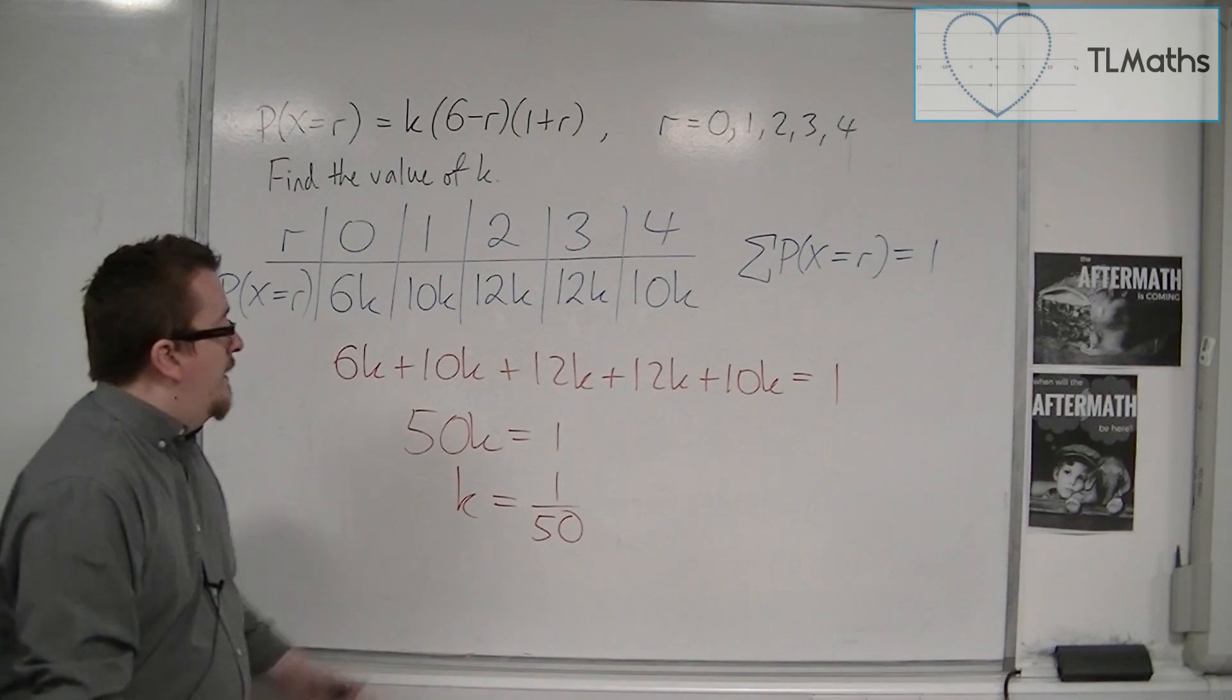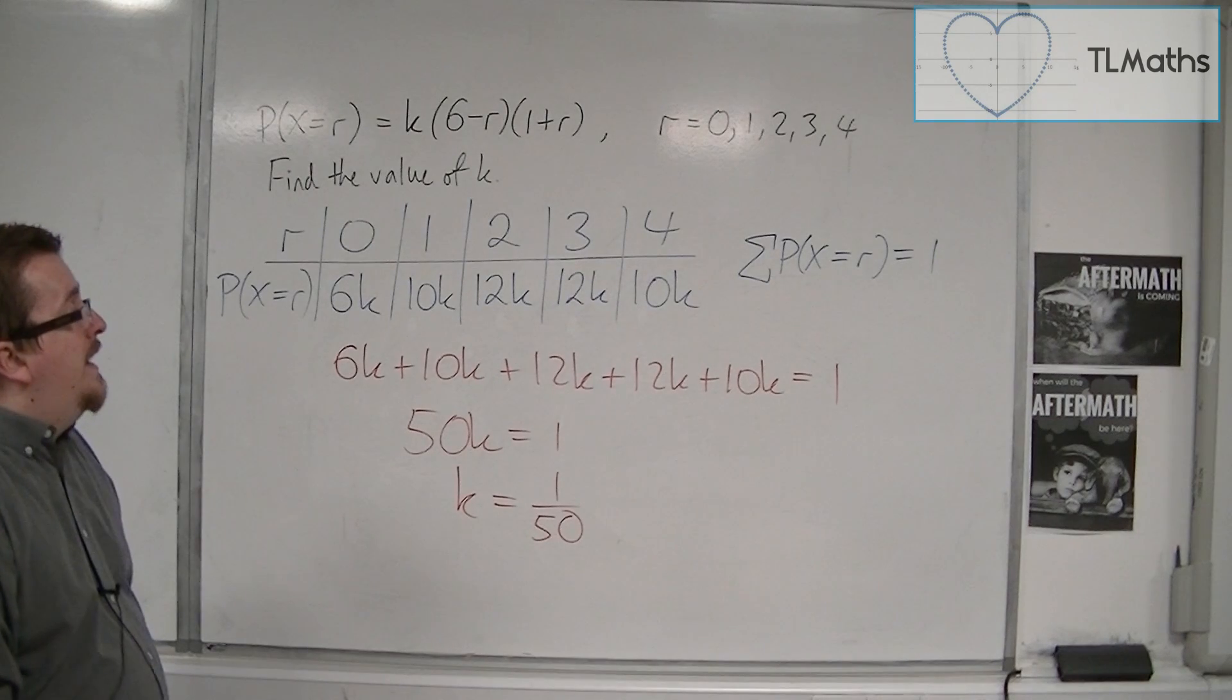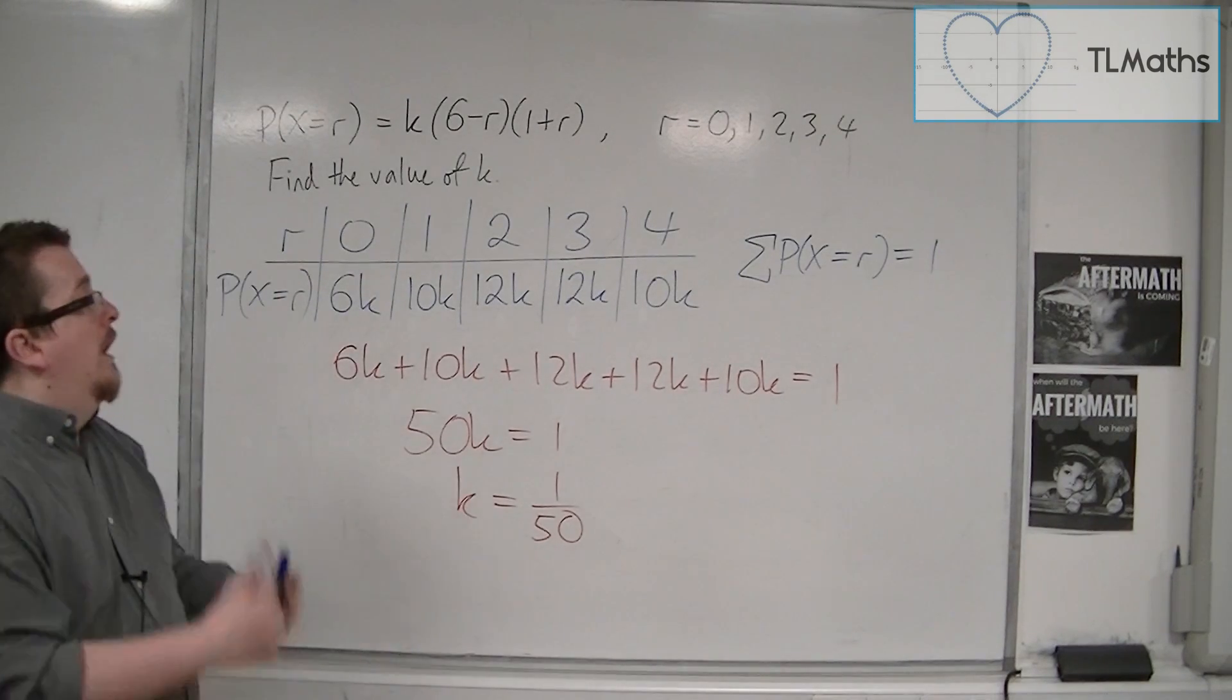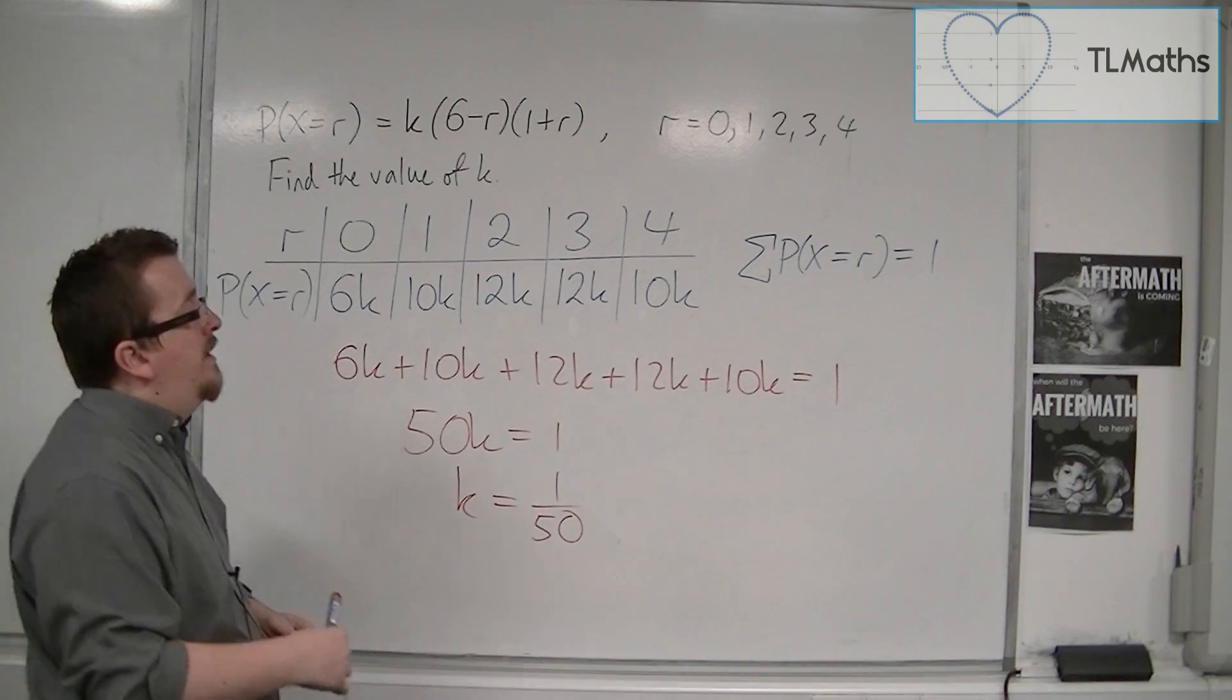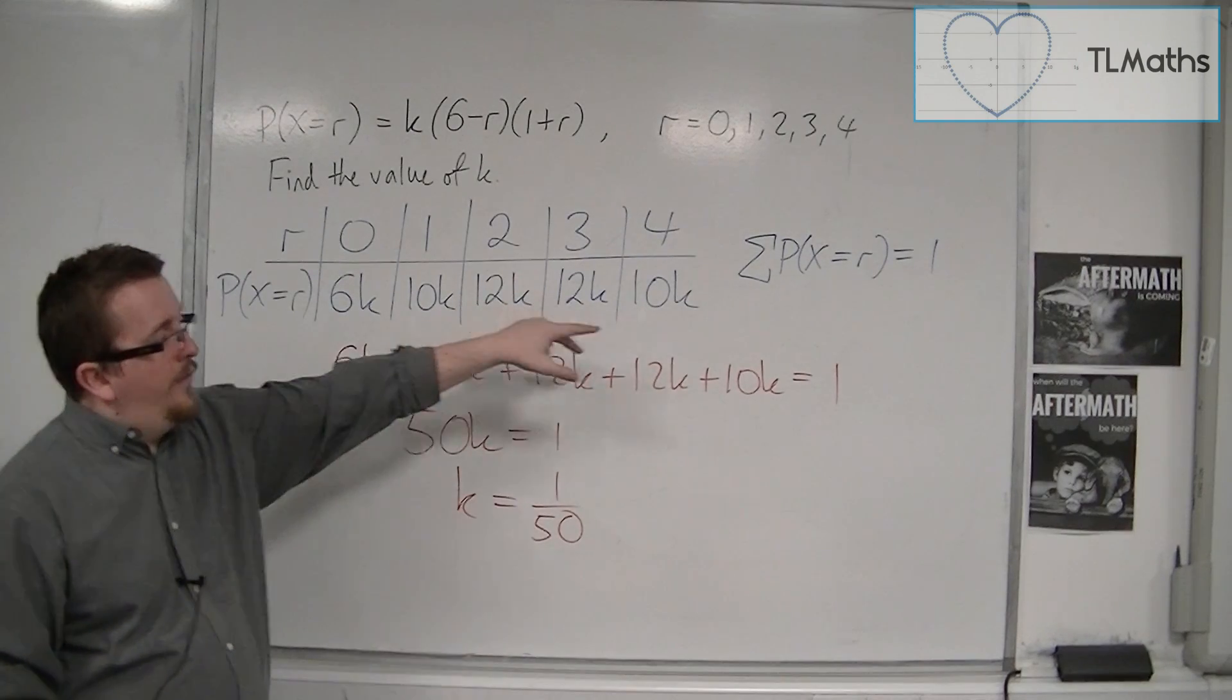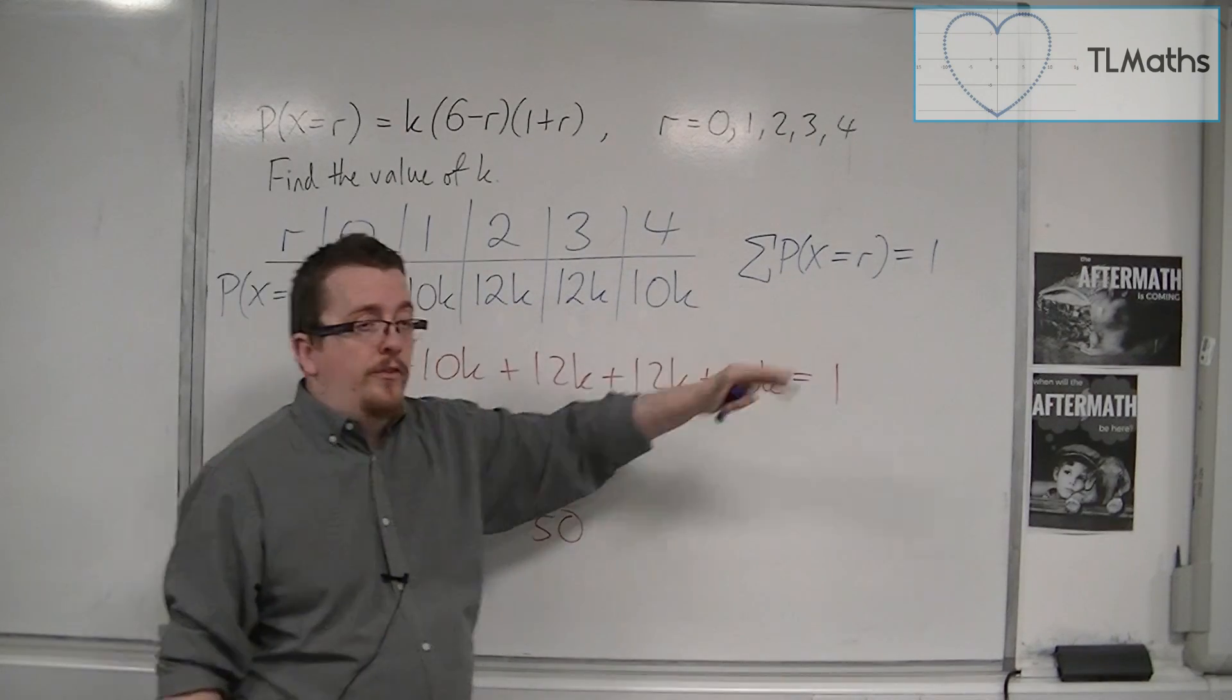So that has found us our value of k. The tabular method makes it easy to see what the individual probabilities are, and then we just use this result to solve an equation for k.